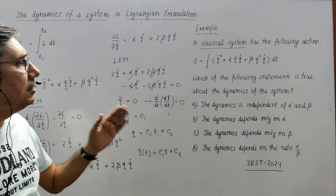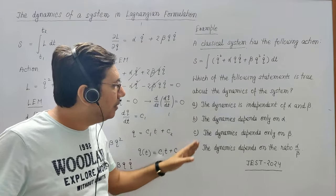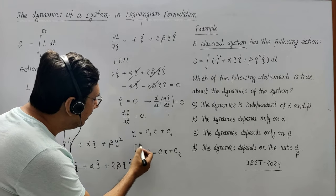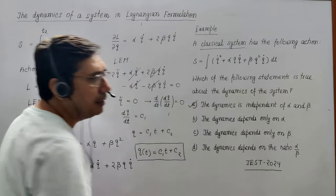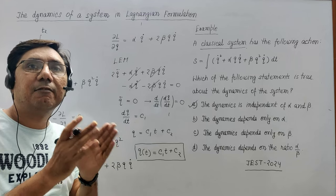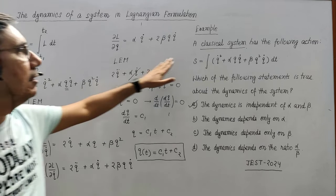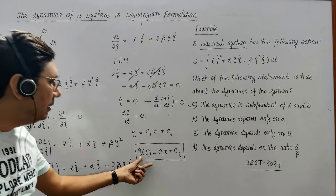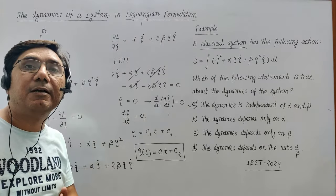The question asked which of the following statements is true about the dynamics of the system: (a) the dynamics is independent of α and β, (b) dynamics depends only on α, (c) dynamics depends only on β, or (d) it depends on the ratio of α and β. By this equation, we can observe that the dynamics of the system is independent of α and β. So our answer is (a). To summarize: in configurational space, a system follows the path for which the action integral is minimum. By comparing the given action with the definition, we find the Lagrangian, and solving Lagrange's equation of motion we find the dynamics — q(t) = c₁t + c₂ — which is independent of α and β.